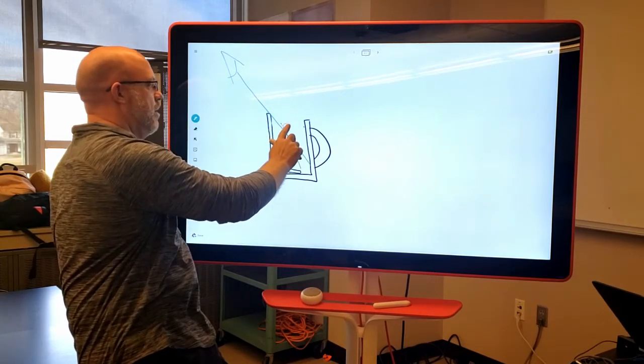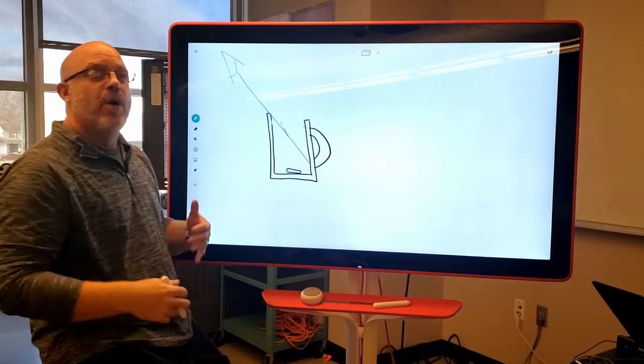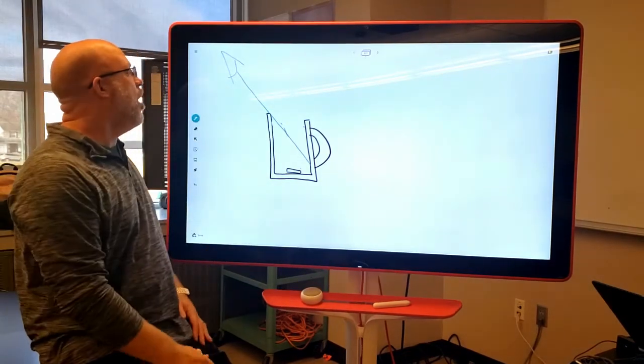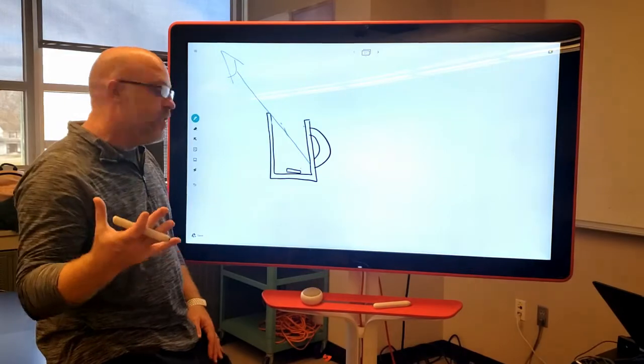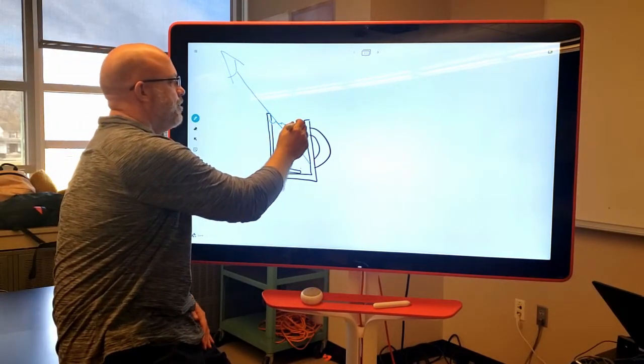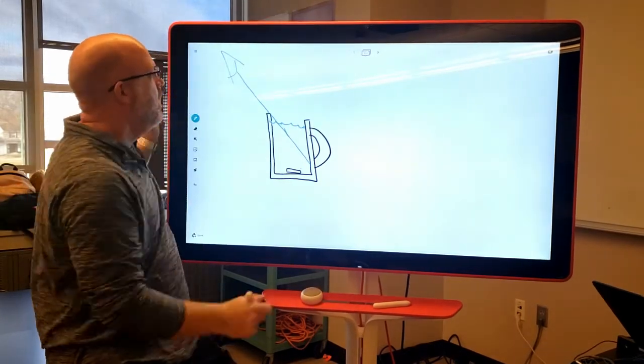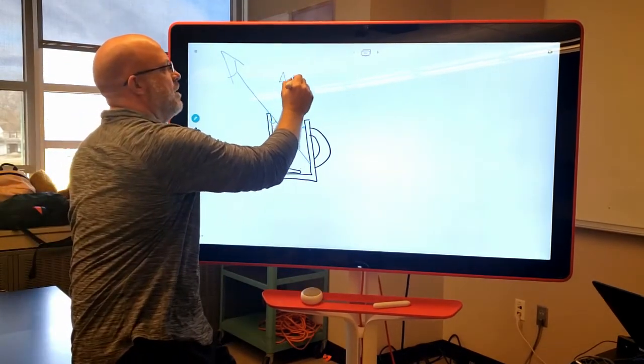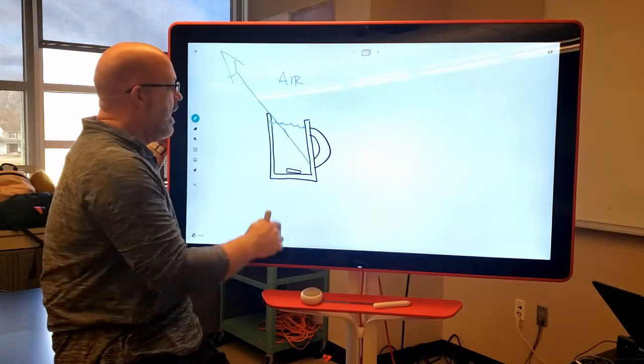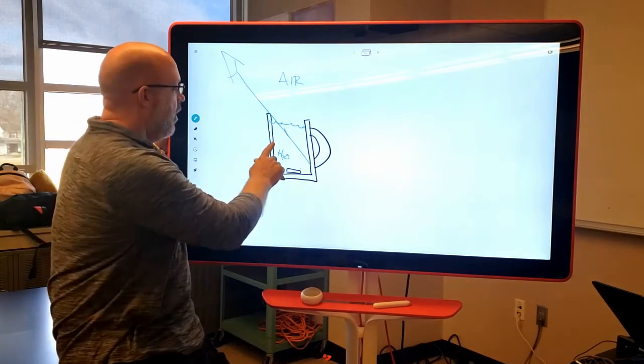The question is why can you see it when you put water in? And the word is refraction. So what happens is when I put water in, when light goes from a thin substance, that thin substance is air, and it goes into a thicker substance which is H2O water. When it goes into those, the light slows down.